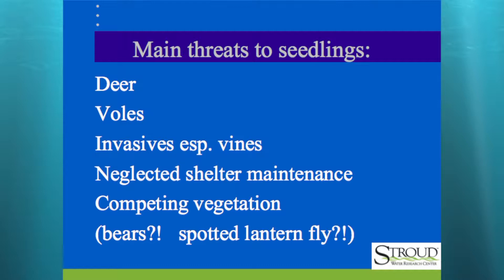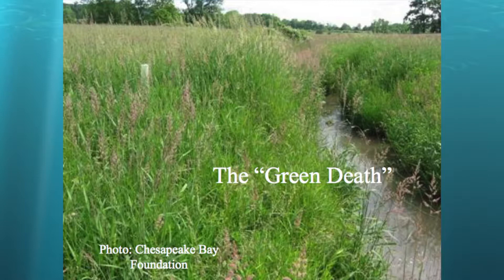The main threats I see in my experience are: voles first, deer second, invasive vines in the southeast particularly, and neglected shelter maintenance. Competing vegetation is further down on the list. Depending where you are, I've seen bears go up one row of tree shelters and down the next — they were all snack dispensers, they all had wasps in them. The bears figured that out and wrecked every last one of the tree shelters on the property.